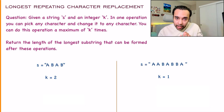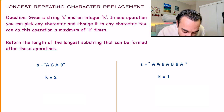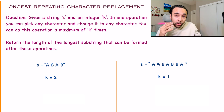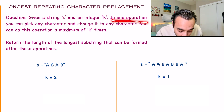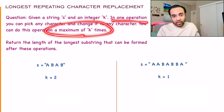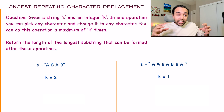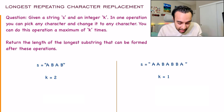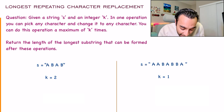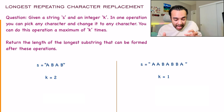Starting with the problem, let's make sure we understand it correctly. We are given a string and an integer k. You can perform operations on this string — in one operation, you can pick any character in the string and change it to any other character. The significance of k is that you can perform this operation a maximum of k times. Given all of this, you need to find the longest substring you can form that has all repeating characters.